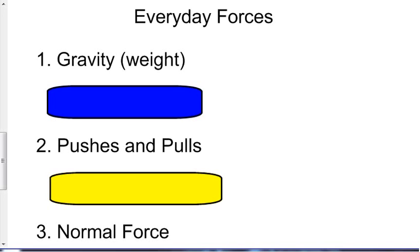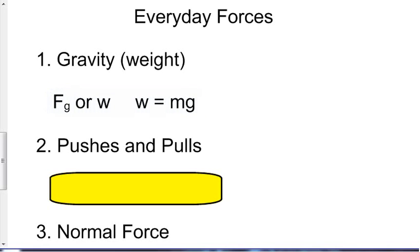Kicking things off — everyday forces. We're going to define the force of gravity, which is defined as the weight of something. We can abbreviate that as F sub G, or as W for weight. There is a formula: weight equals mass times G, where G is negative 9.81 meters per second squared, which is the acceleration due to gravity.